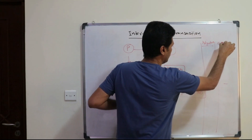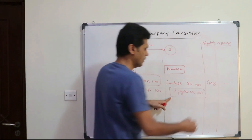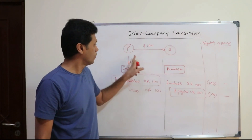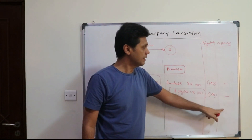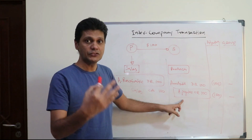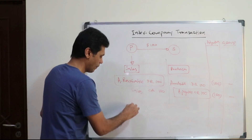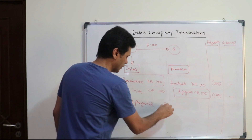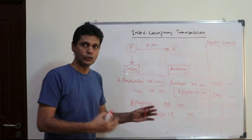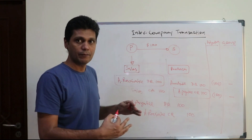The accounts receivable has to be eliminated, so there won't be any accounts receivable balance in the group. And the accounts payable also has to be eliminated — there won't be any accounts payable due to the parent company. In order to eliminate these, you will have to pass a journal entry in the consolidated financial statements. That entry will be: accounts payable debited $100 and accounts receivable credited $100. Thereby you will eliminate the intercompany transaction so that it will not be recorded in the group financial position.